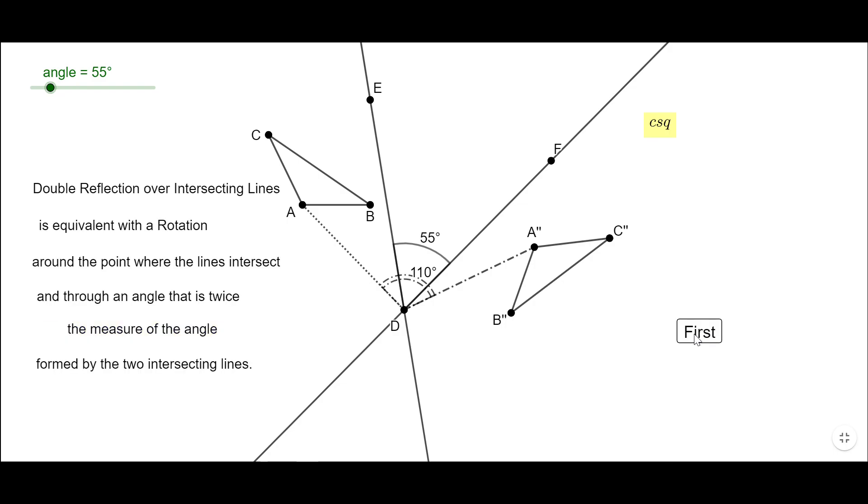I'm going to click here on Next, and you're going to see this summary right here. Double reflection over intersecting lines is equivalent to rotation around the point where the lines intersect, and through an angle that is twice the measure of the angle formed by the two intersecting lines. Yes, if you remember, I said 55, 110.